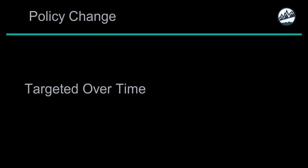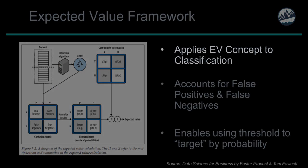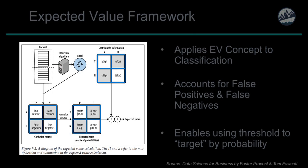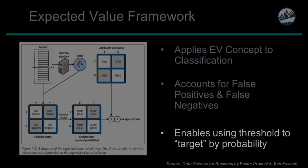Now let's look at a policy change to reduce overtime for select employees identified with a high risk of leaving. This is a more sophisticated analysis involving a methodology called the expected value framework — a way to apply expected value to a classification model. It enables us to combine the threshold, knowledge of costs and benefits, and the confusion matrix converted to expected rates to account for false positives and false negatives, potentially gaining greater expected savings than an all-or-none approach.